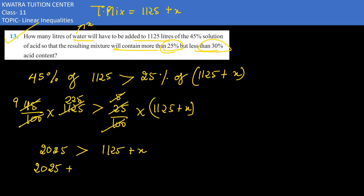Take 1125 to the left hand side. So it would be 2025 minus 1125 greater than x. Subtract the value from 2025. That's 900. 900 is greater than x.